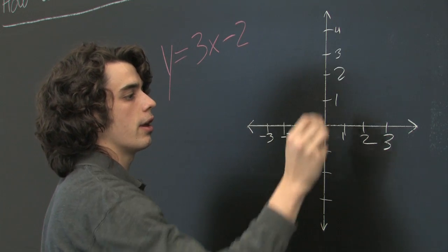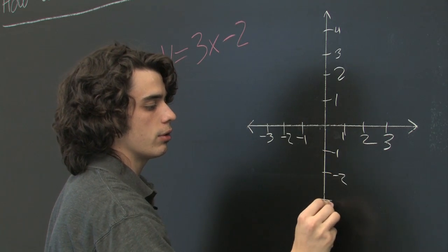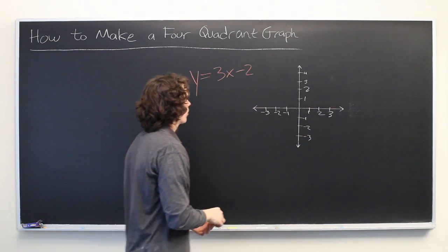One, two, three, four, negative one, negative two, negative three.